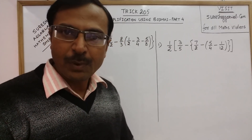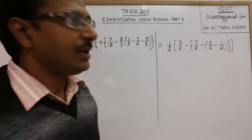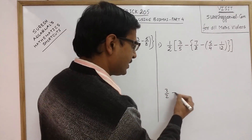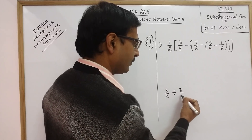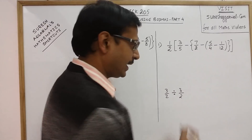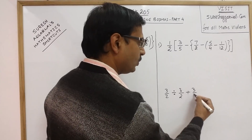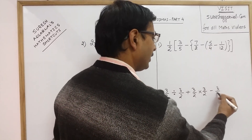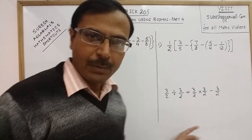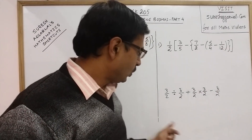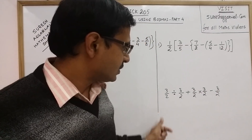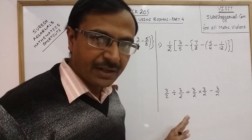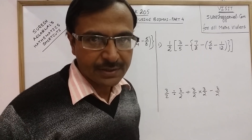Just to make you aware of the sequence of operations, I am taking a very simple problem in which we have the number 3/2 and we have to first divide by 3/2, then add 3/2, then multiply by 3/2, and then subtract 3/2. You should know the sequence of operations to arrive at the correct answer.